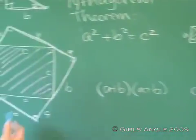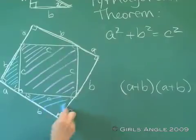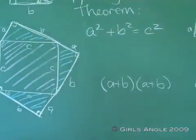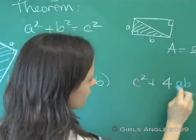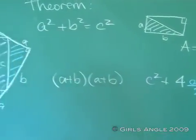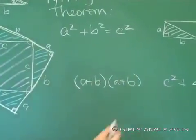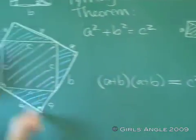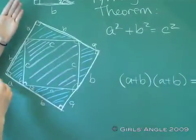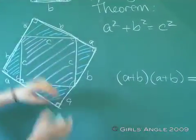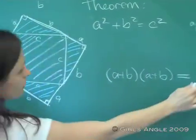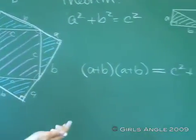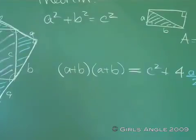Okay, so we're adding four of these things here. So we get c squared plus four times ab over two. And we should put an equal sign here. On the one hand, we can find the area right away because it's a square with side a plus b. On the other hand, we can break it into the inside square with area c squared and the four triangles, each with area a times b over two.